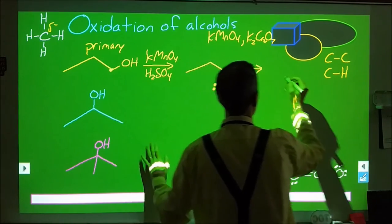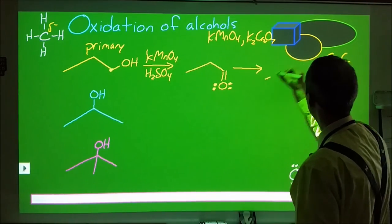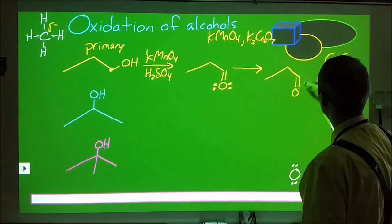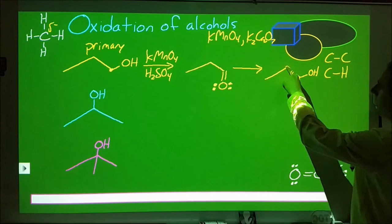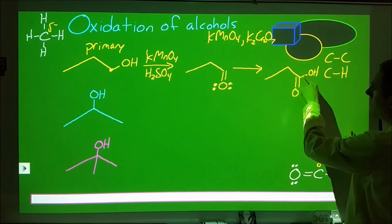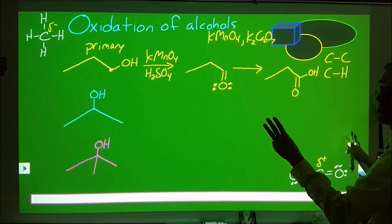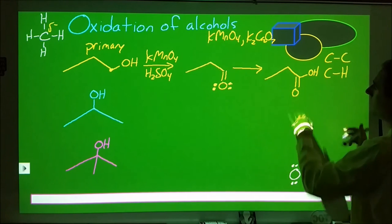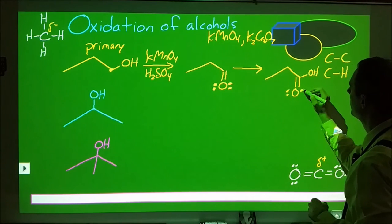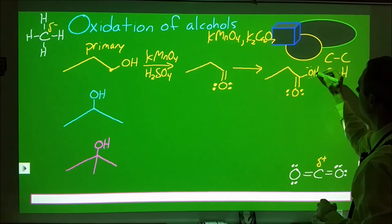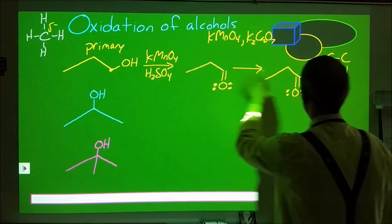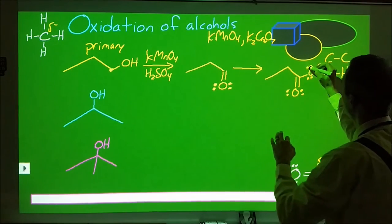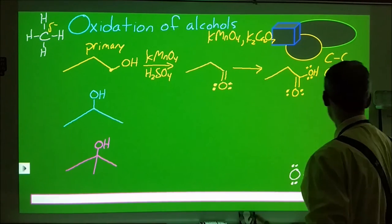If we continue on with this reaction, we're going to end up forming a carboxylic acid. Now we have one bond to a carbon, two bonds to this oxygen, one bond to this oxygen, so three bonds to an oxygen. This is a higher state of oxidation than what we had previously. When you stop here versus when you continue on depends on how you actually carry out this reaction. We'll look at that in a second.